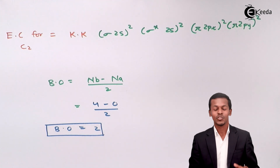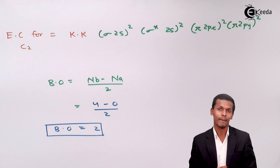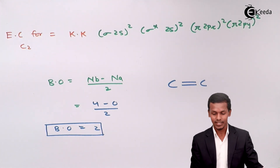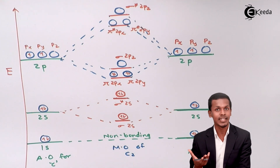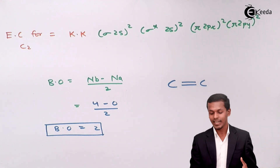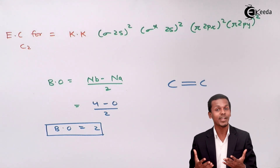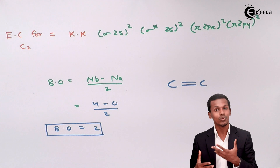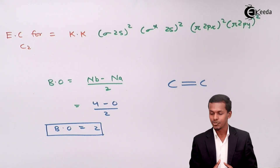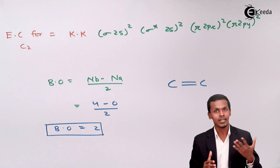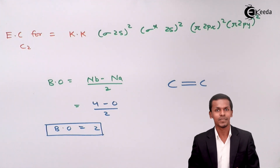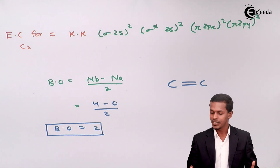The bond order is 2, which means the two carbon atoms forming the molecule have two bonds. Notably, the bonds formed between the two carbon atoms in this molecule are due to the pi orbitals — specifically pi 2px and pi 2py. So the two bonds in C2 are both pi bonds, which is completely different from what we have learned previously. Similar to the boron molecule, it involves a weak bond due to the pi orbitals.